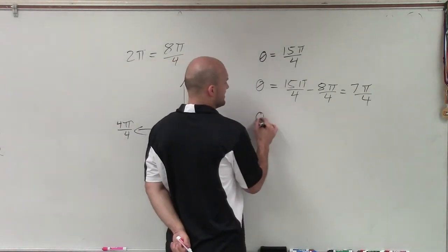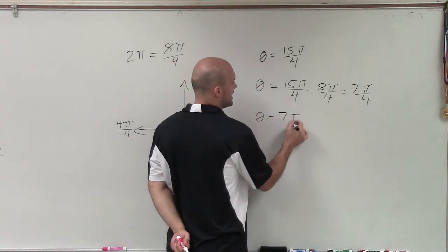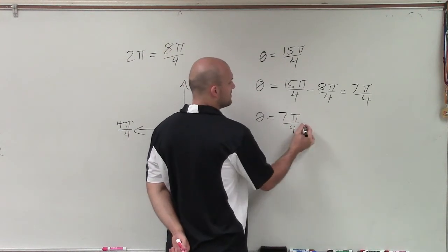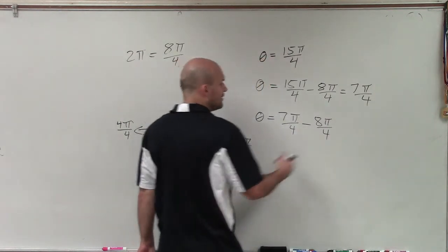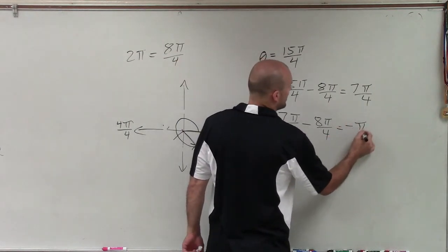So what I can do then is if I just take 7 pi over 4, and then minus, again, 2 pi. Again, then what I'll have is a negative pi over 4.